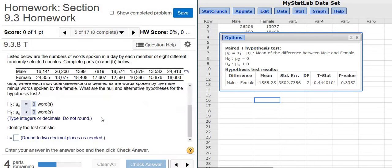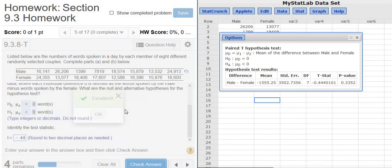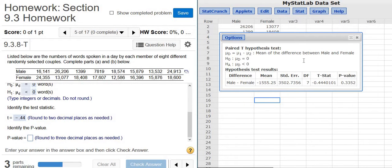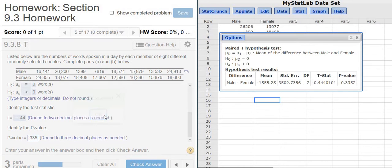Good stuff. And then it wants the test statistic, which we have here. To two decimal places, that's negative 0.44, so negative 0.44, check answer. Good stuff. And then it wants the p-value to three decimal places, so 0.335, 0.335, check answer. Good stuff.